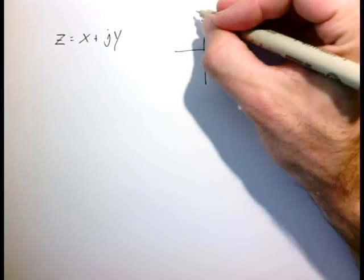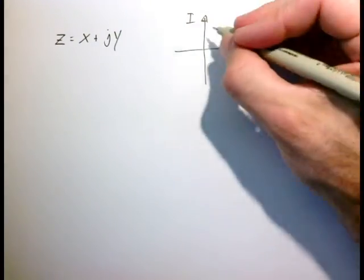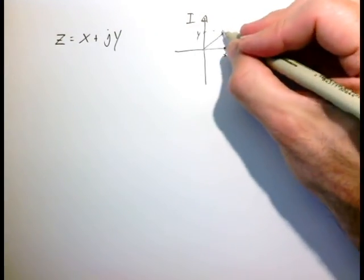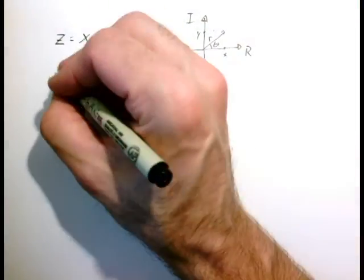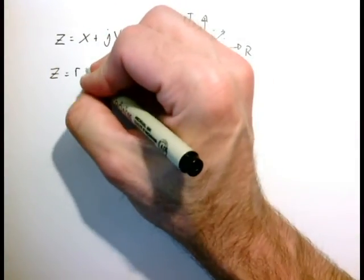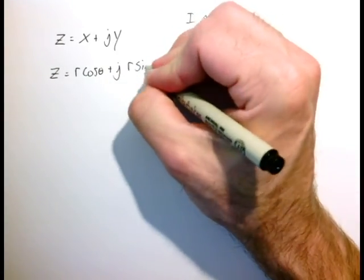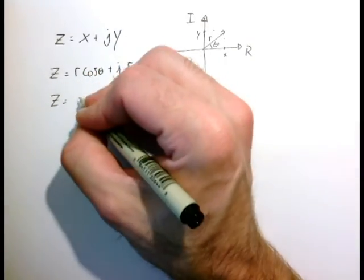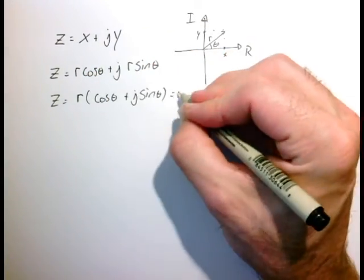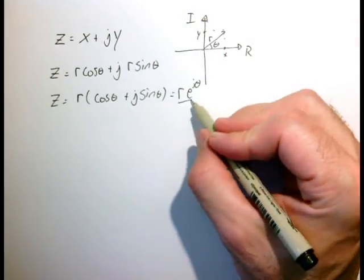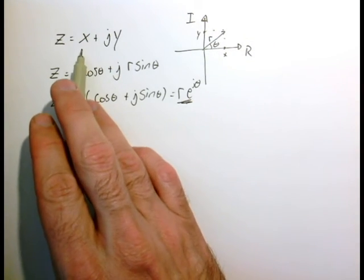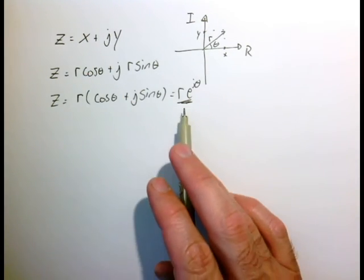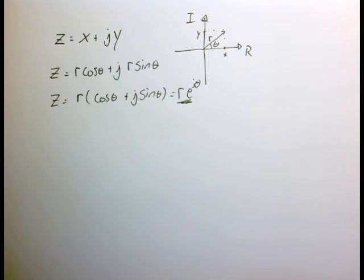Let's go back to our generic complex number. Recall the plot with the real axis and imaginary axis: we have x, y, equivalently written as r and theta. From geometry, x equals r cosine of theta and y equals r sine of theta. Using the identity we just derived, we can rewrite this as r·e to the j·theta. This is a very common notation — taking our complex number in real-plus-imaginary form and writing it as r·e to the j·theta.